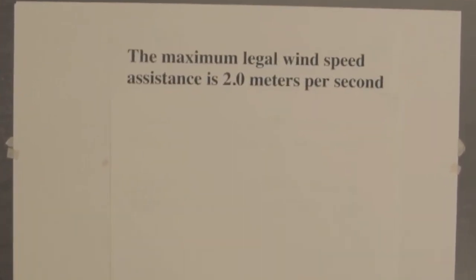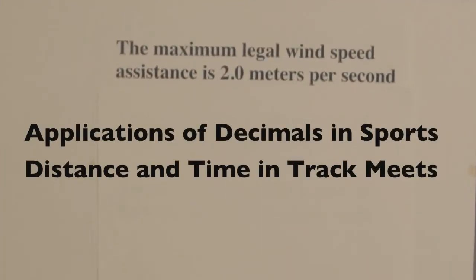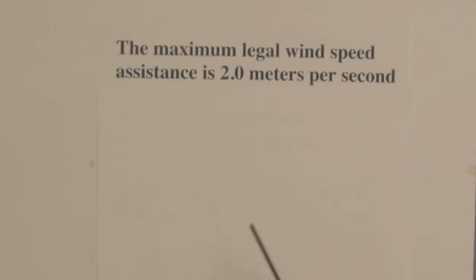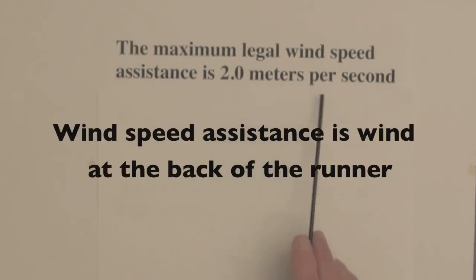There are lots of applications of decimals in sports. For example, in track meets, distance and time. In some track events, wind speed is measured. The maximum legal wind speed assistance is 2.0 meters per second. Now this is the wind speed that will be in the back of the runner assisting her or him along.